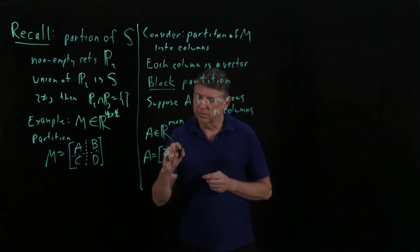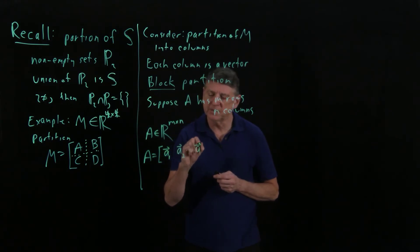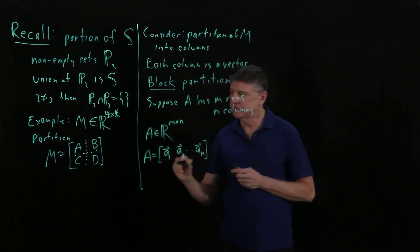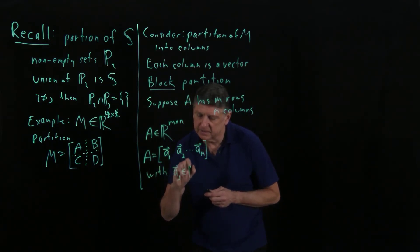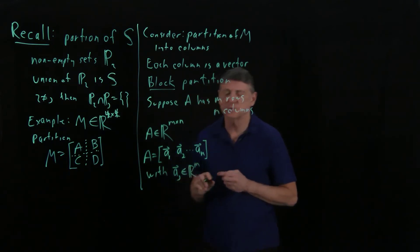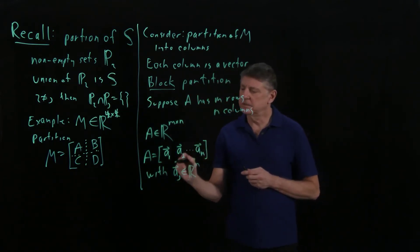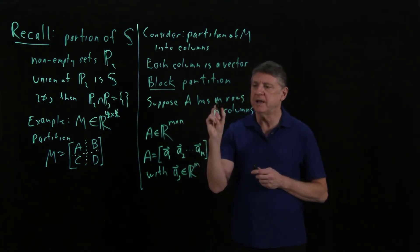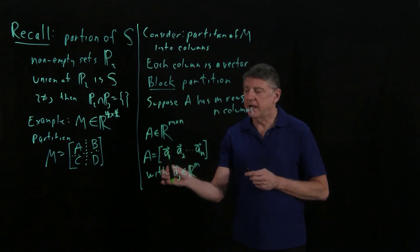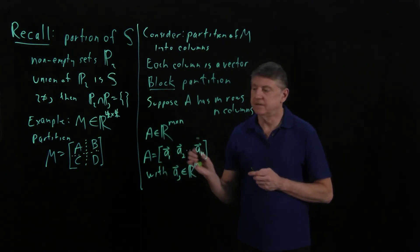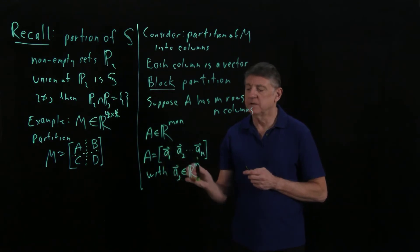And what's the second column? Well, that's also a vector, and so on, until I've represented every column of the matrix. Now, if I look at the jth column, that is a vector that has M entries. So we have to keep distinct this idea of how many rows we have and how many columns we have. Here, what we have are an ordered set of vectors, and each one of them has M entries.